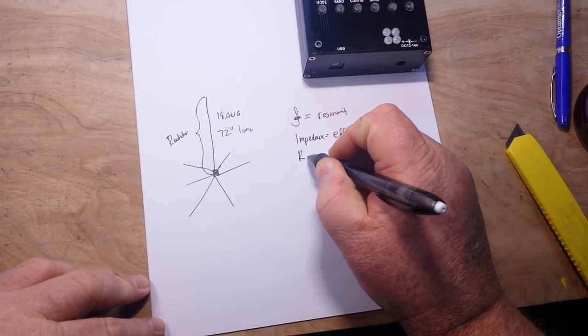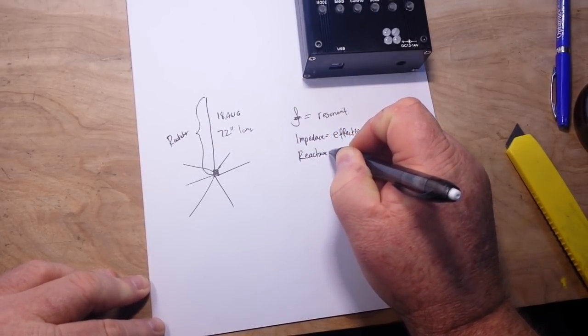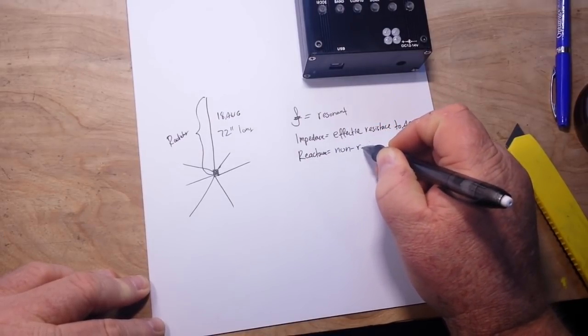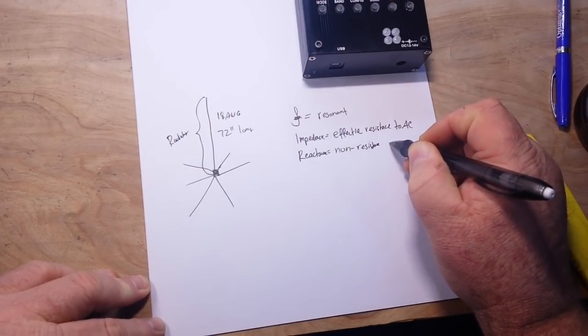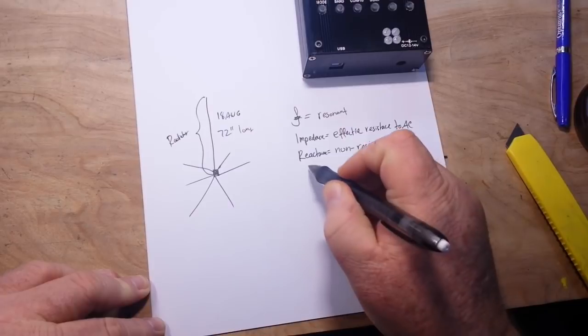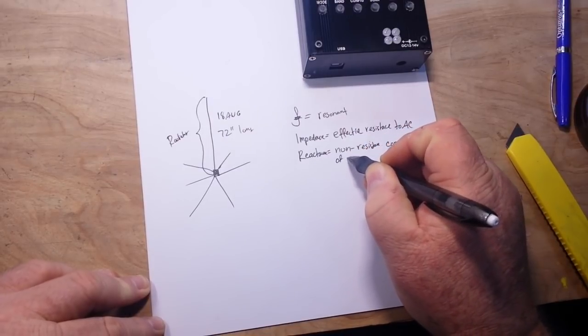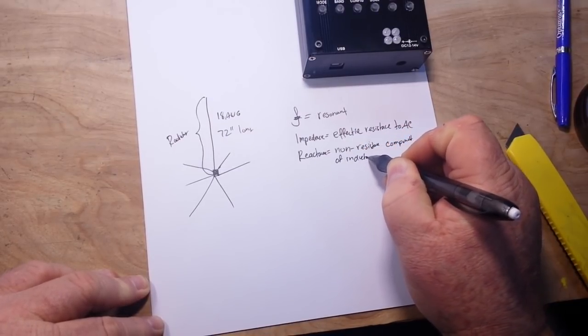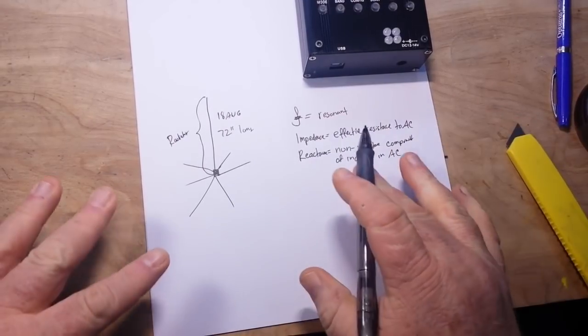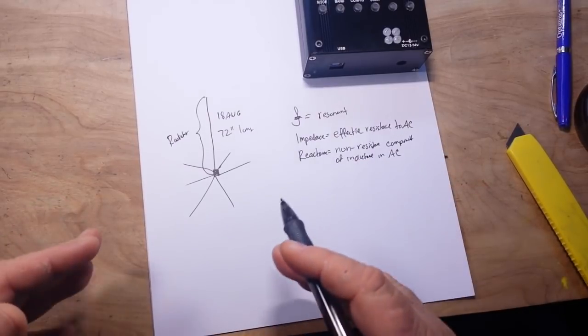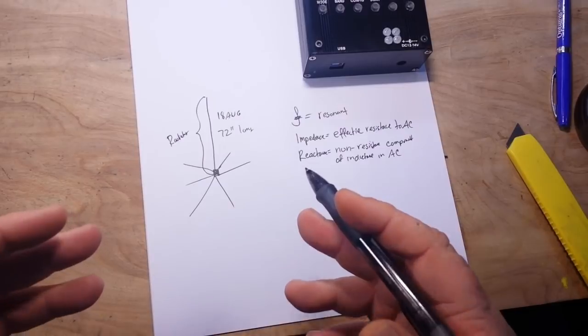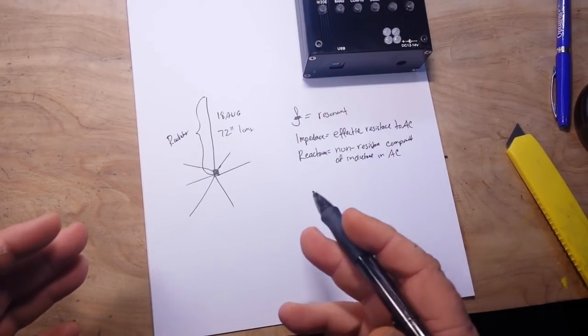And we also need to know the reactance. And that is the non-resistance component of inductance in AC. Because everything we're dealing with here is AC, not DC. In DC we have resistance, which is just a measure of the degree to which a conductor opposes electrical current.